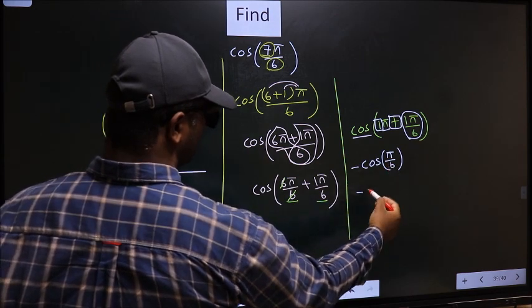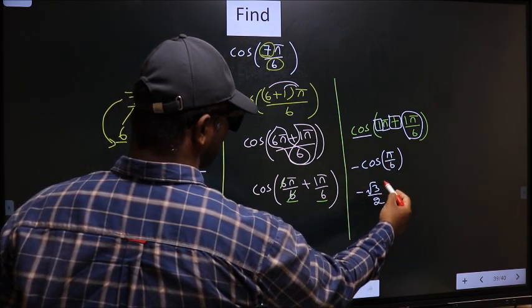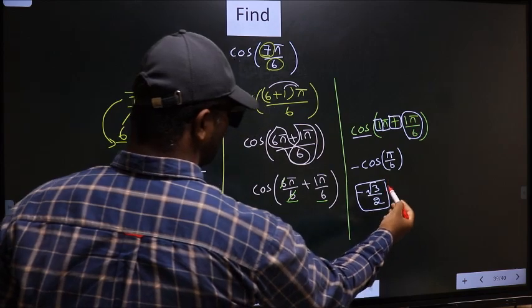So negative cos(π/6) is √3/2. So this is our answer.